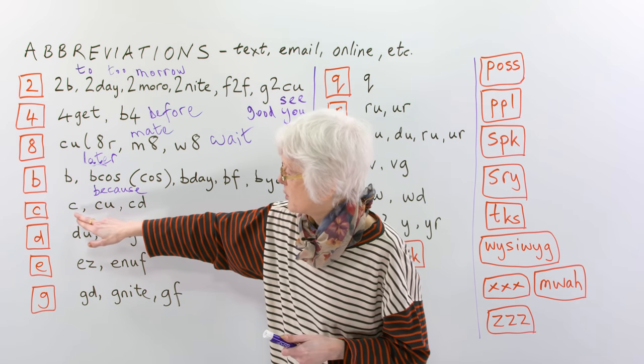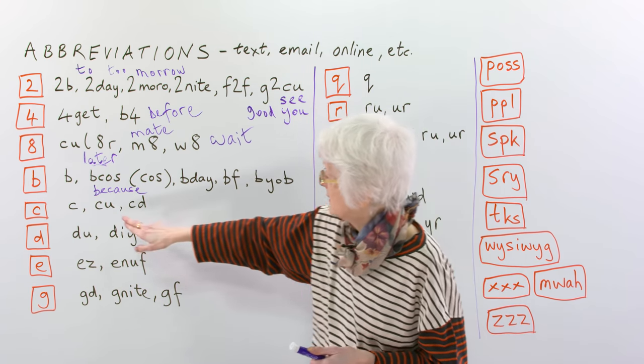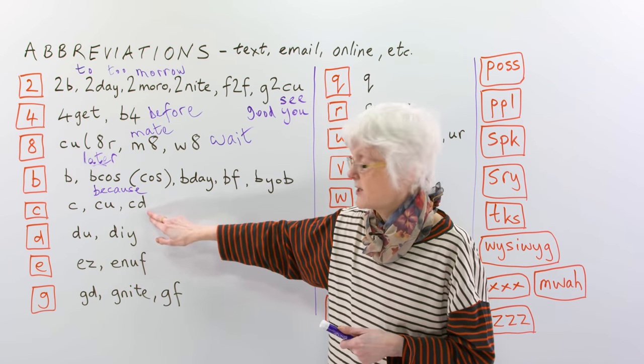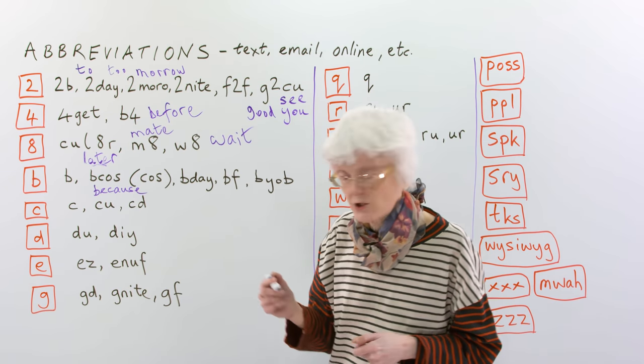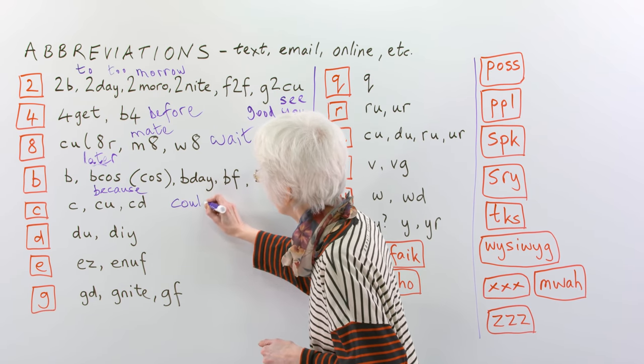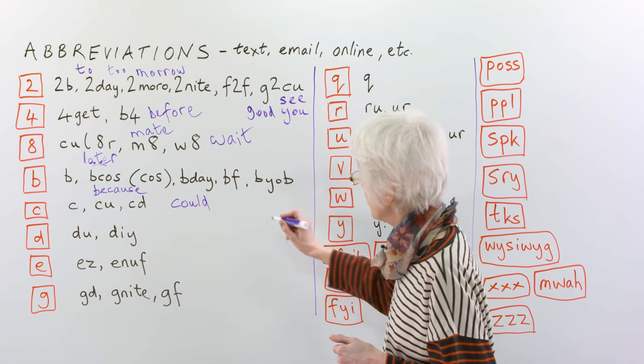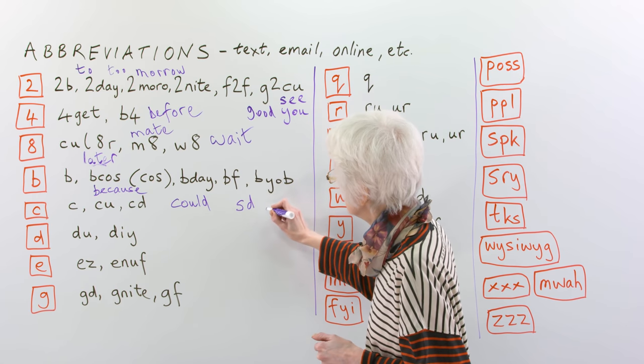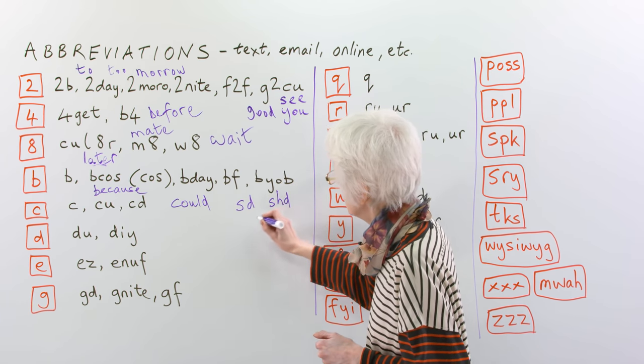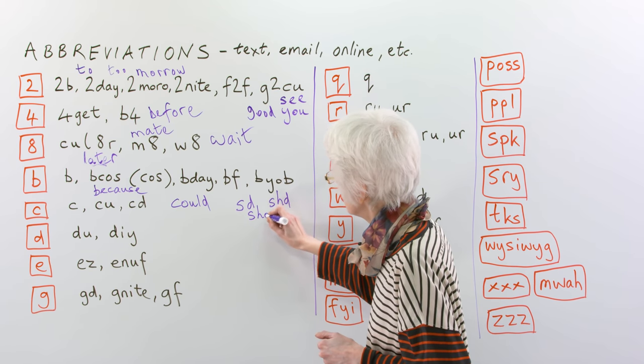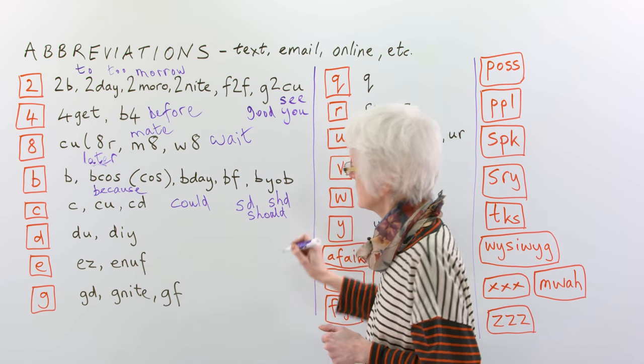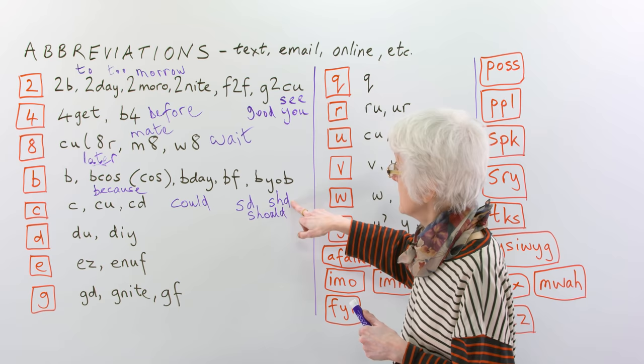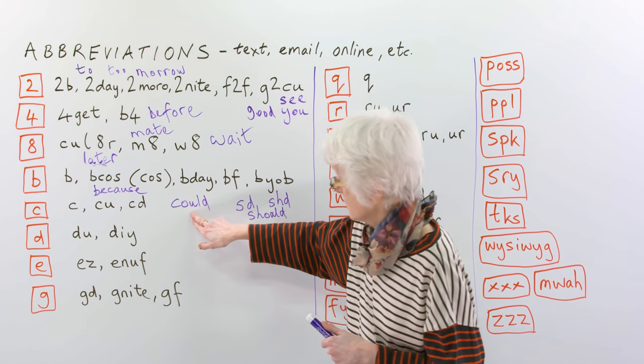Right. Let's move on. So, we've got C again, which we had before. C-U, as we had before. And also, C-D together can mean could. Could. And also, we don't have it written here, but S-D or S-H-D can mean should. Could and should. That's the more usual one with S-H-D, so could, could, okay?